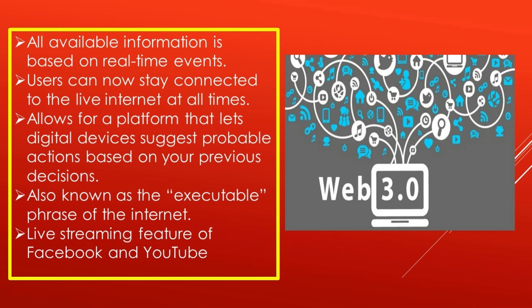In Web 3.0, all available information is based on real-time events, and users can stay connected to the live internet at all times. Web 3.0 allows digital devices to suggest probable actions based on your previous decisions. It is also known as the executable phase of the internet, and we experience its features every day.